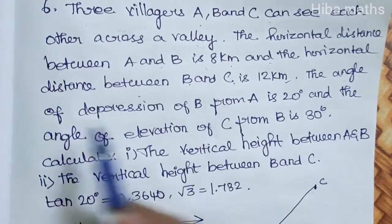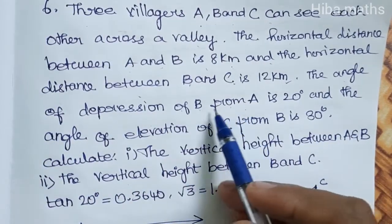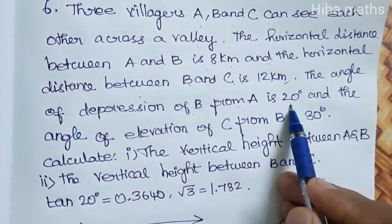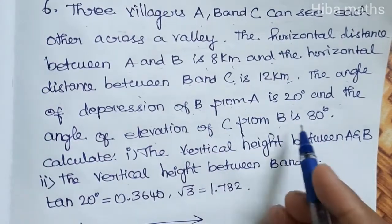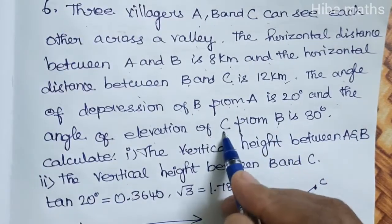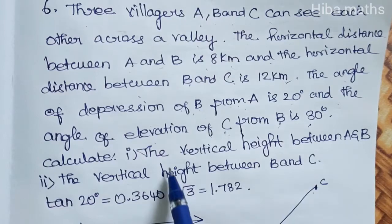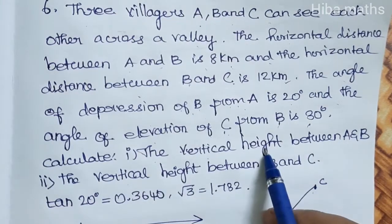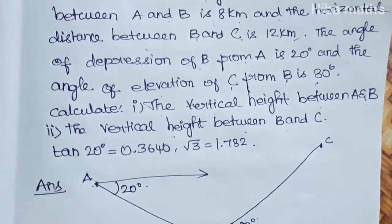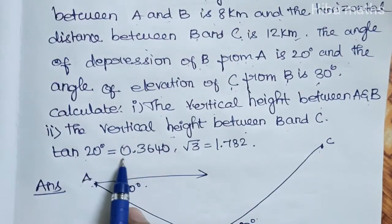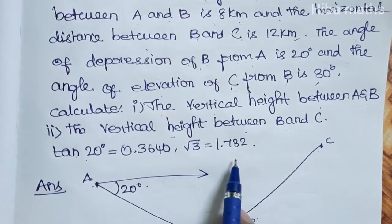The angle of depression of B from A is 20 degrees, and the angle of elevation of C from B is 30 degrees. We need to calculate the vertical height between A and B, and the vertical height between B and C. The value of tan 20° is 0.3640 and √3 is 1.732.